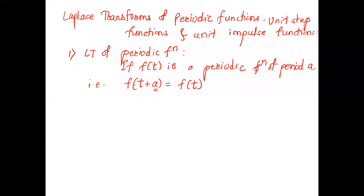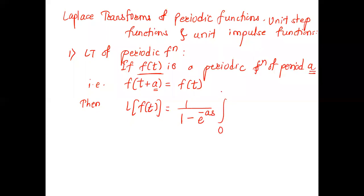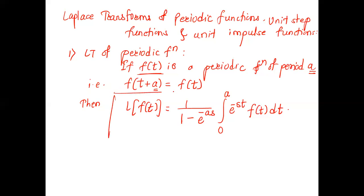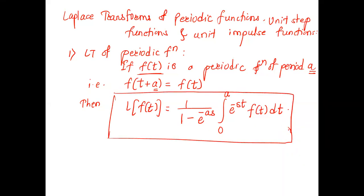We have to now define the Laplace transform of a periodic function. The Laplace transform is: L{f(t)} = 1/(1 - e^{-as}) times the integral from 0 to a of e^{-st} f(t) dt, where a is the period. The usual definition is the integral from 0 to infinity, but for a periodic function the upper limit becomes a, multiplied by 1/(1 - e^{-as}). Please remember this — it can be asked in MCQ.